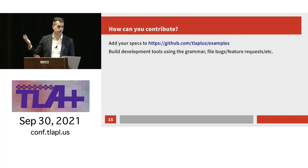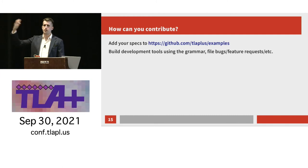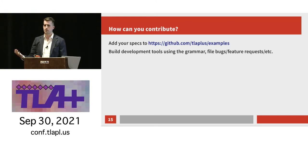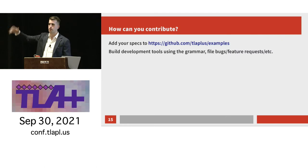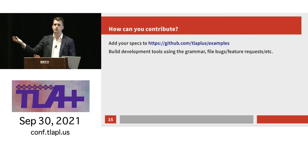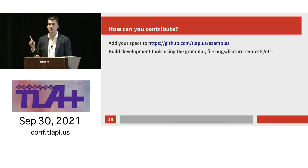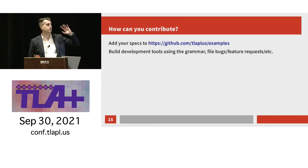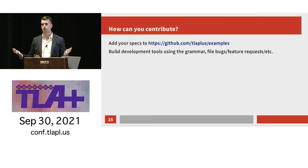One thing that helped a lot was the TLA+ examples repo, because when you're writing a parser, having a corpus of specs to test against is really helpful. During my continuous integration process, the repo downloads the examples repo and runs the parser against every file. So if you have any TLA+ files just hanging around in some GitHub repo — even if you think they're not good enough for the examples repo, they are, put them in there. And if you're into building actual development tools, you can use the grammar, file bugs, feature requests, all that stuff.